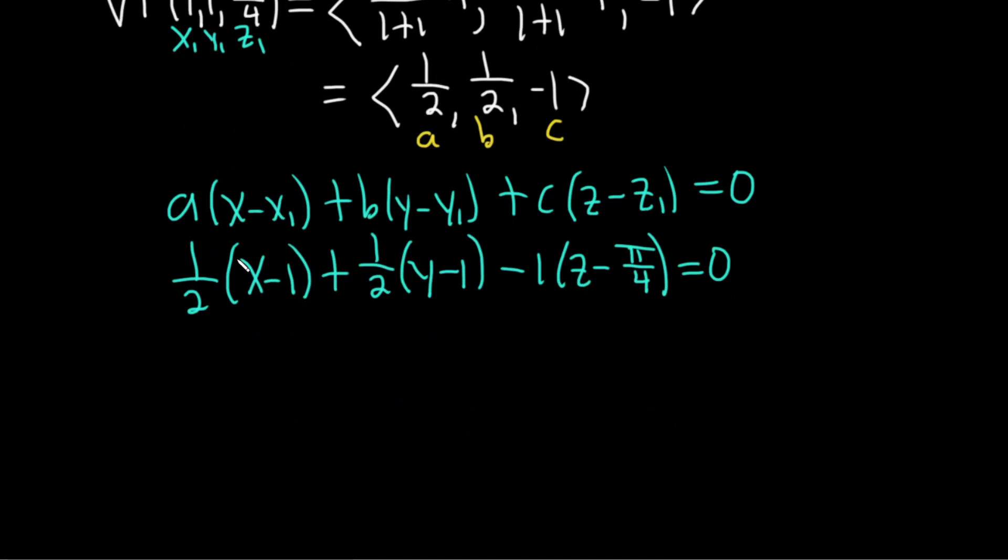Okay, we can just leave it like this, or we can clean it up. I'll go ahead and clean it up. 1/2 times x is (1/2)x. 1/2 times -1 is -1/2. 1/2 times y is (1/2)y. And 1/2 times -1 is -1/2. And we have -1 times z. And -1 times -π/4 will give us π/4.